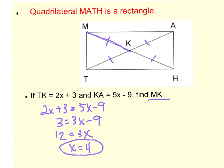Therefore, if I plug 4 back in to either TK or KA, I will be able to find MK. I'm just going to do 2 times 4 and add 3. So MK would equal 8 plus 3, which is 11.